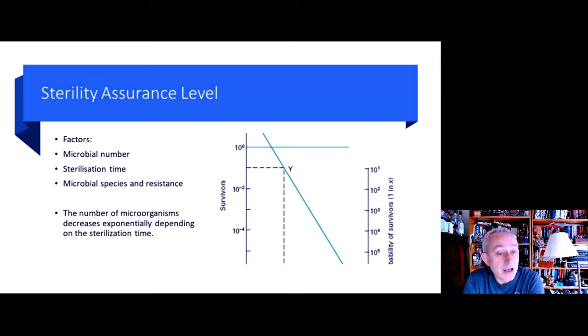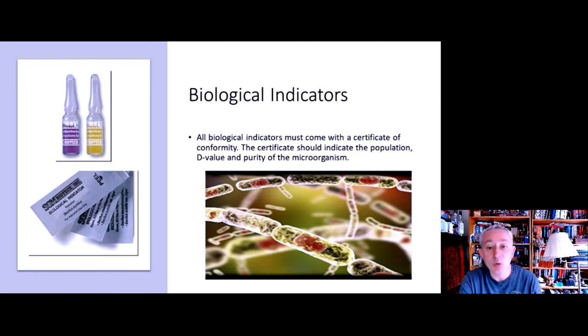So in essence, the hotter the temperature and the longer the time, then the faster the kill rate. And we require a particular temperature and a particular time to get the optimal kill rate. So how do we know all of this? Well, we need to use biological indicators.